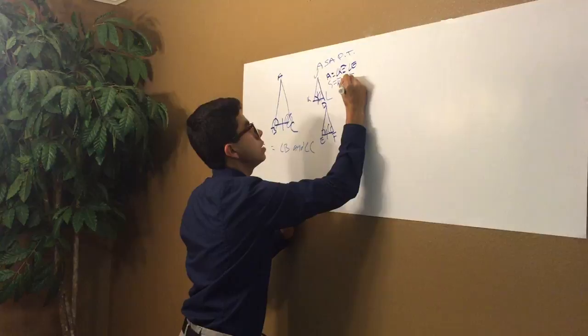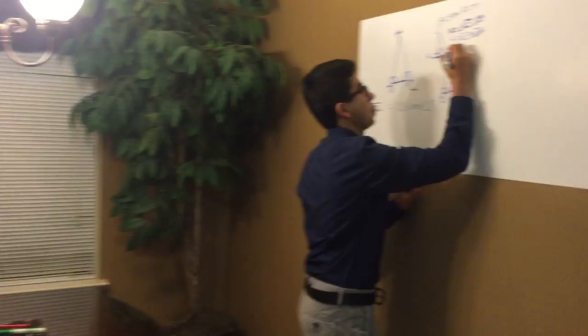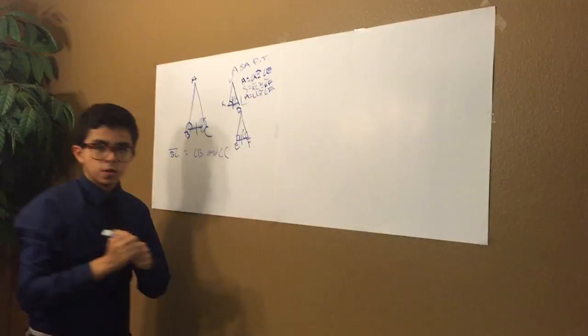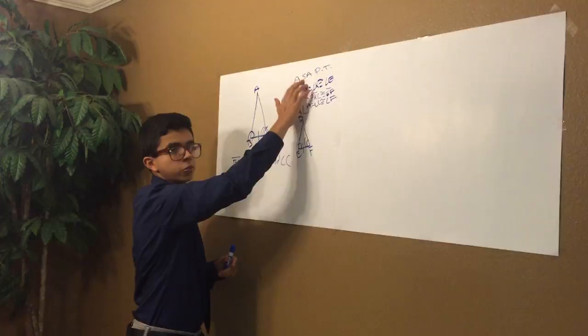Okay, now for the last angle, angle L is congruent equal to angle F. So as we know, these two triangles are congruent because of the angle-side-angle postulate. Any questions? No, Mr. Valdez. Thank you, Mrs. Sanchez.